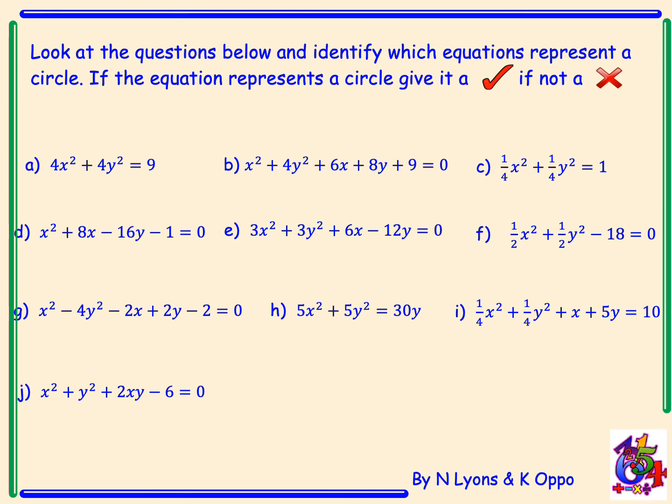Look at the questions below and identify which equations represent a circle. If they represent a circle we will give it a tick, and if not we will give it a cross. We will look at a and b together. For a: 4x squared plus 4y squared equals 9. This has x squared and y squared with the same coefficient, therefore it is a circle.